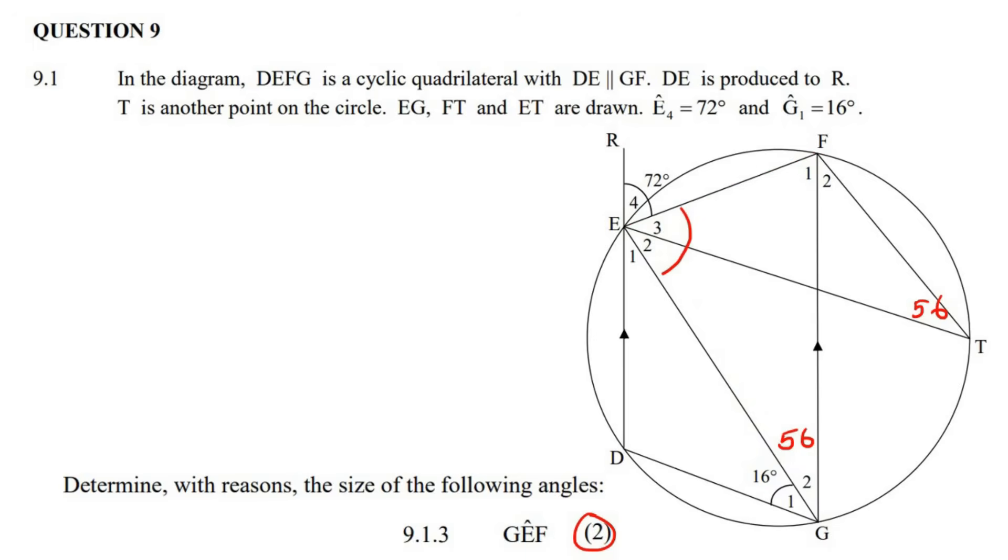So straight away, my eyes were caught onto these parallel lines. So because of those parallel lines, I know that alternating angles would tell us that E_1 is going to be 56 degrees because of alternating angles. So you could say alt angles, and then which lines are parallel? DE is parallel to GF.